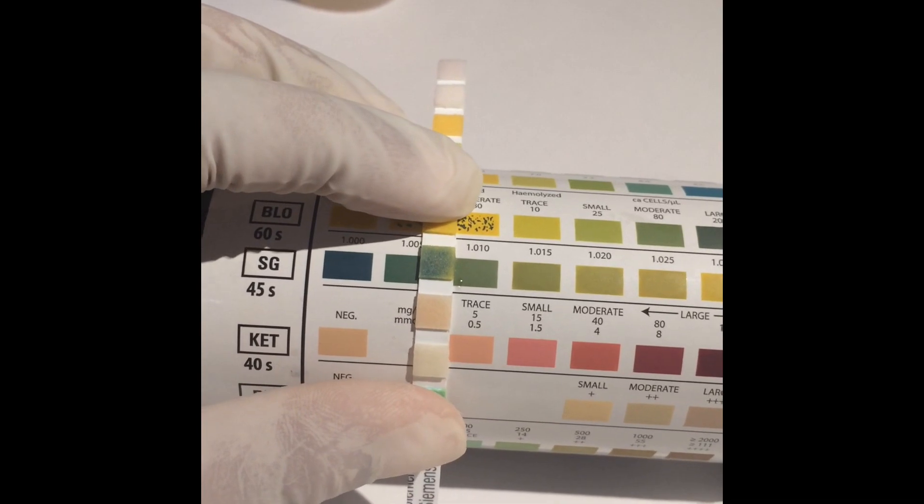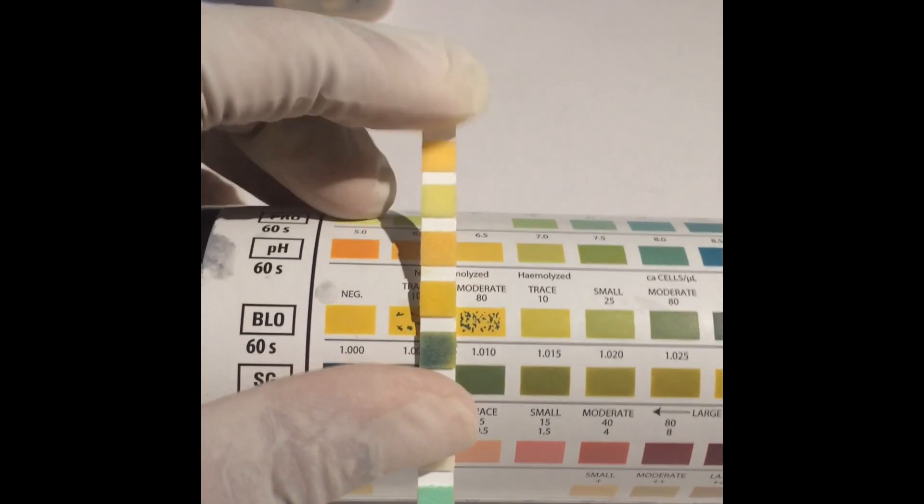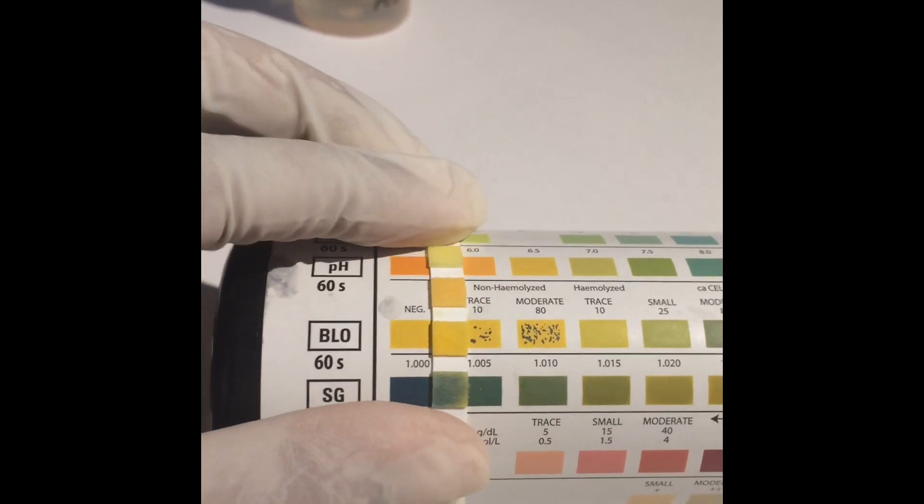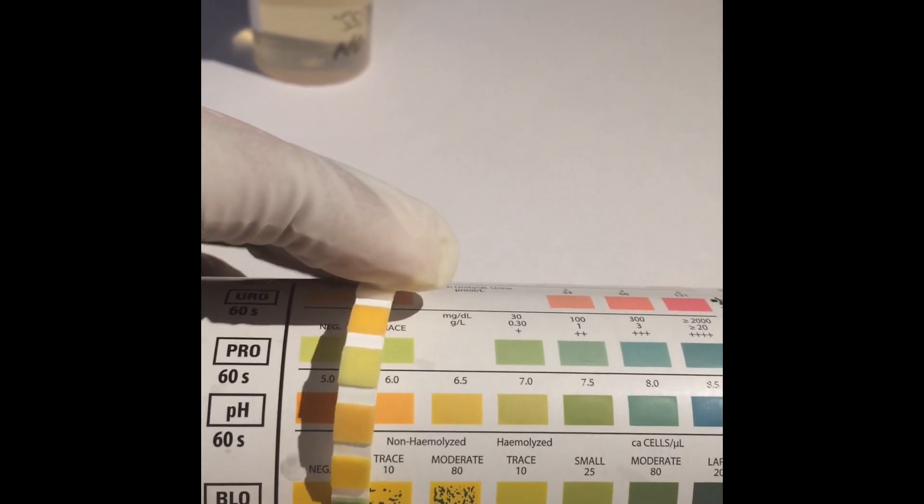pH 6.5, slightly acidic. Urobilinogen would be negative.